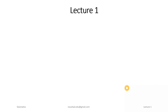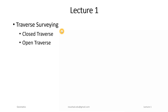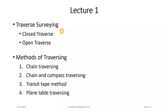In this first lecture of traverse surveying, we discussed what traverse surveying is — it can be a closed traverse or an open traverse. The four methods of traversing are: chain traversing, chain and compass traversing, transit tape method, and plane table traversing. Thank you.